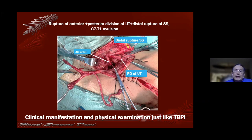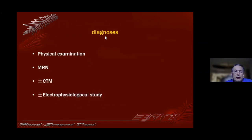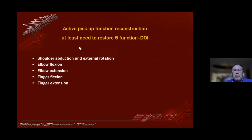For total brachial plexus injury, in our series there are four subtypes. The diagnosis is mostly based on physical examination and MRI. Sometimes we use CTM, and occasionally, not routinely, we use electrophysiology study. If we meet a total brachial plexus injury and plan to repair for active hand function, we need to restore at least five functions. This is Doyle's suggestion, and I agree with it.